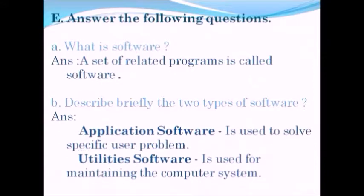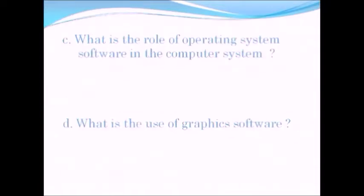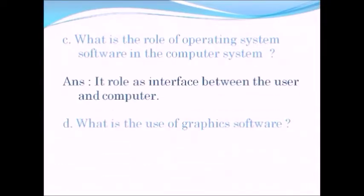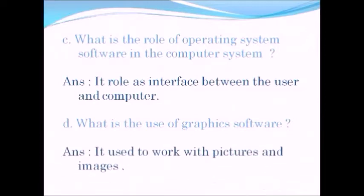Describe briefly the two types of software. Application software is used to solve user-specific problems, and utility software is used for maintaining the computer system. What is the role of operating system software? Its role is as an interface between the user and the computer. What is the use of graphics software? Graphics software is used to work with pictures and images.